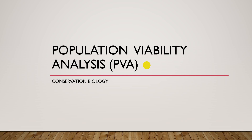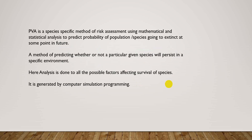Hello everyone. Today we are going to learn about population viability analysis, PVA, in conservation biology. PVA is a species-specific method of risk assessment using mathematical and statistical analysis to predict the probability of a population or species going extinct at some point in the future.